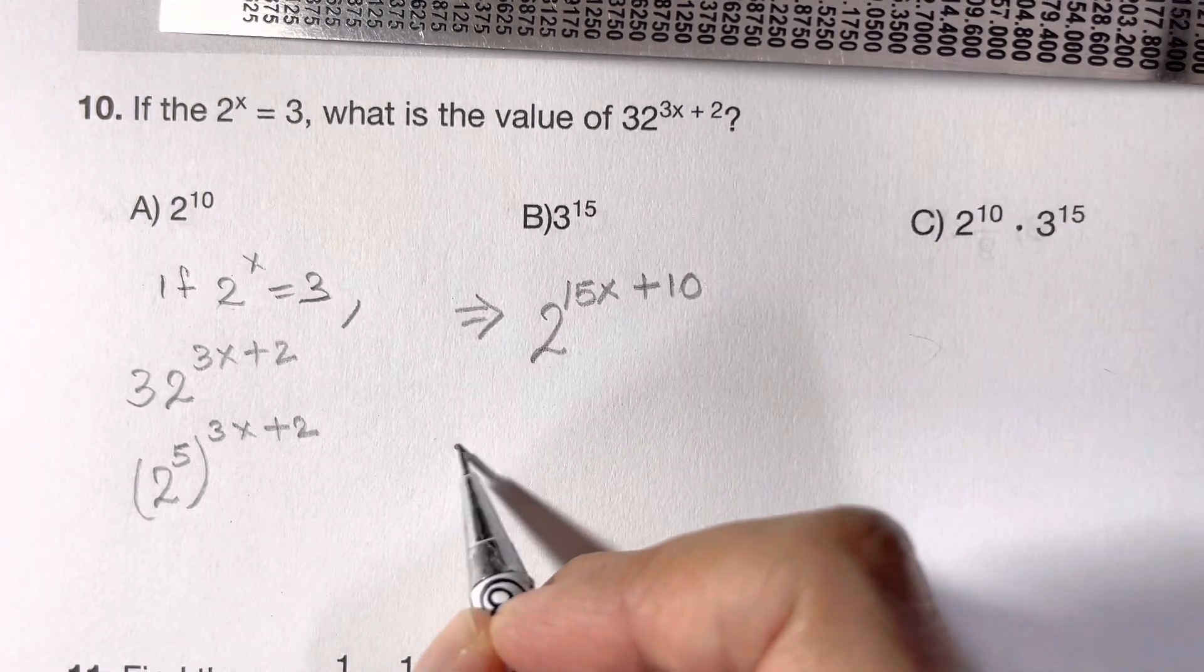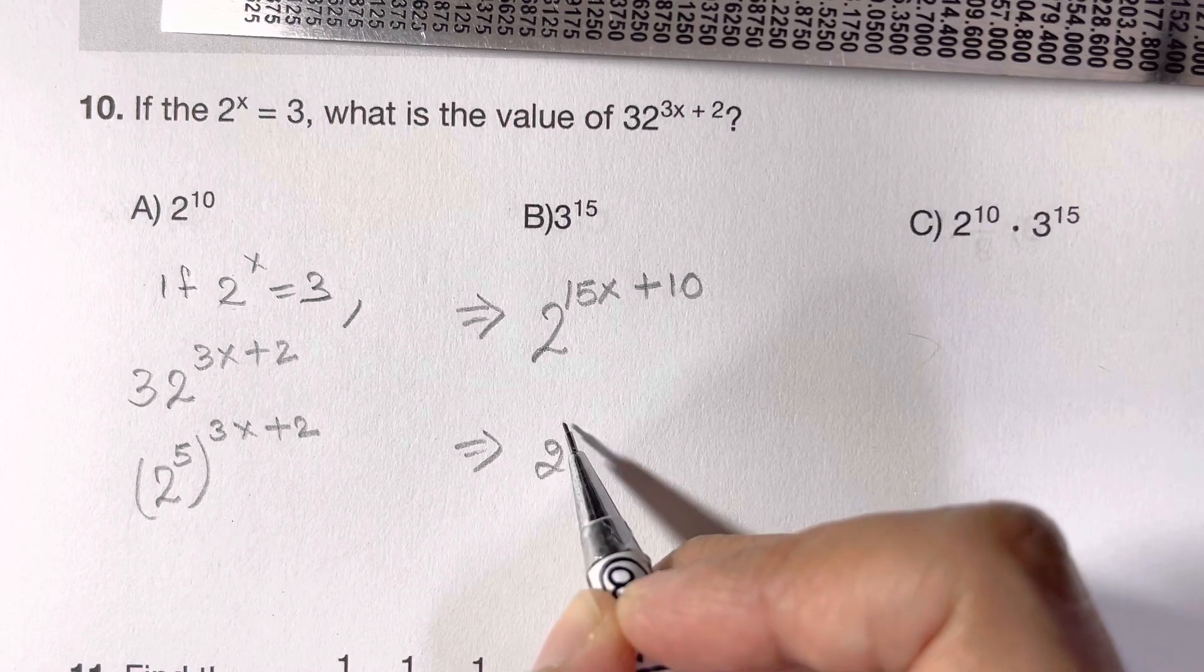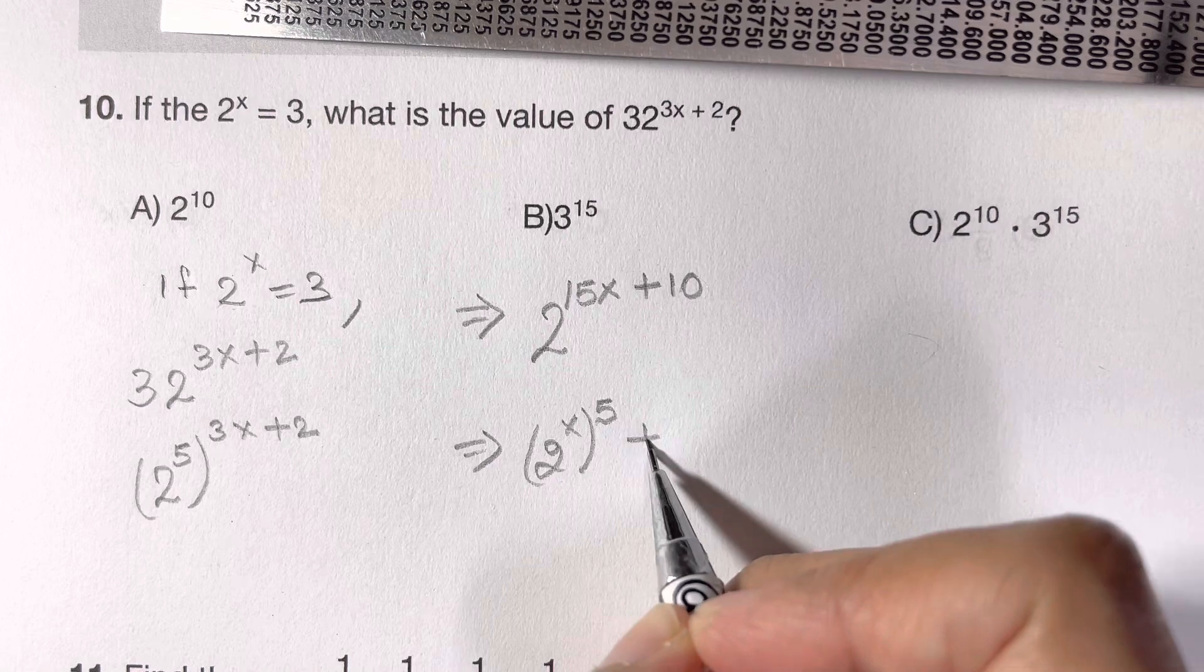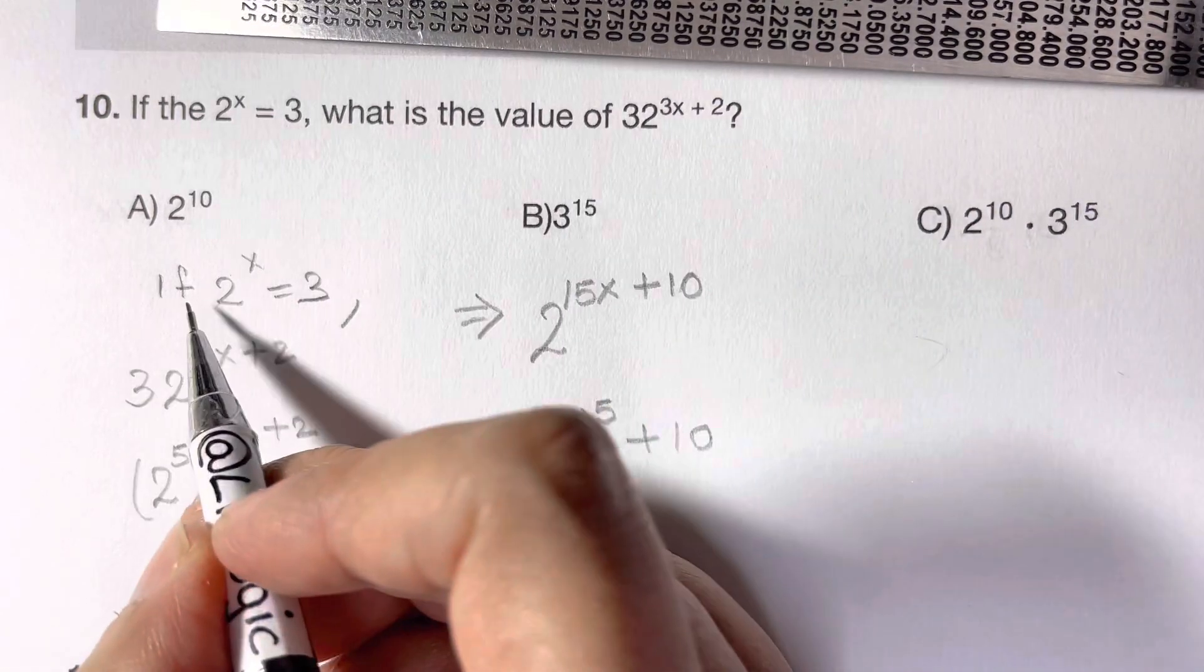Now this thing can be written as 2 to the power of x, whole to the power of 15. Why have I done this? Because we already have 2 to the power of x is 3, so we can just substitute here.